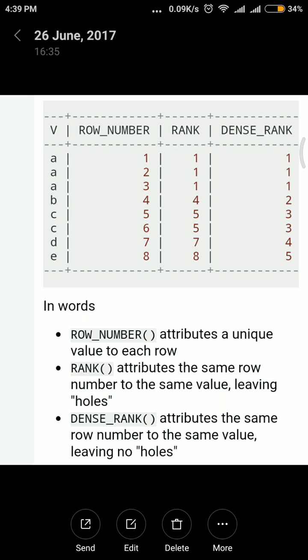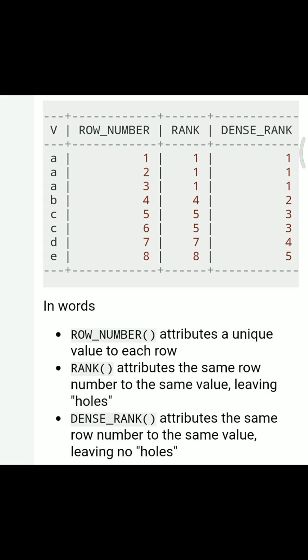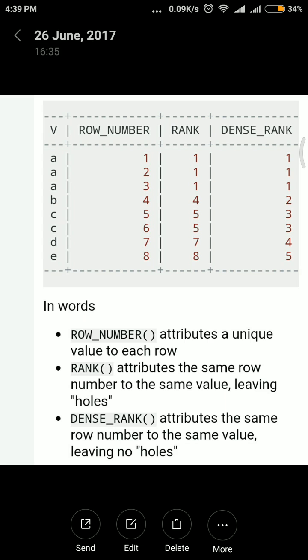Whereas in DENSE_RANK, it will also give a sequence number without leaving holes. If you see here, for the first three 'a's it has given three 1s, and then for 'b' value it will continue with sequence number 2. For 'c', 3. Here again 'c' is repeating, so for the same value, the same number will repeat again. 3 is coming once again, and then the value has changed to 'd', and then we are having 4.